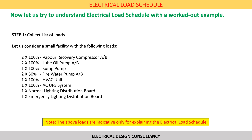To start with, we need to collect the electrical loads of the plant. For our example let us consider a small facility with the following loads: 2×100% vapor recovery compressors, 2×100% lube oil pumps, 1×100% sump pump, 2×50% fire water pumps, 1×100% HVAC unit, 1×100% AC UPS system, 1 normal lighting DB, 1 emergency lighting DB. The loads indicated here are indicative only for explaining the load schedule calculation.